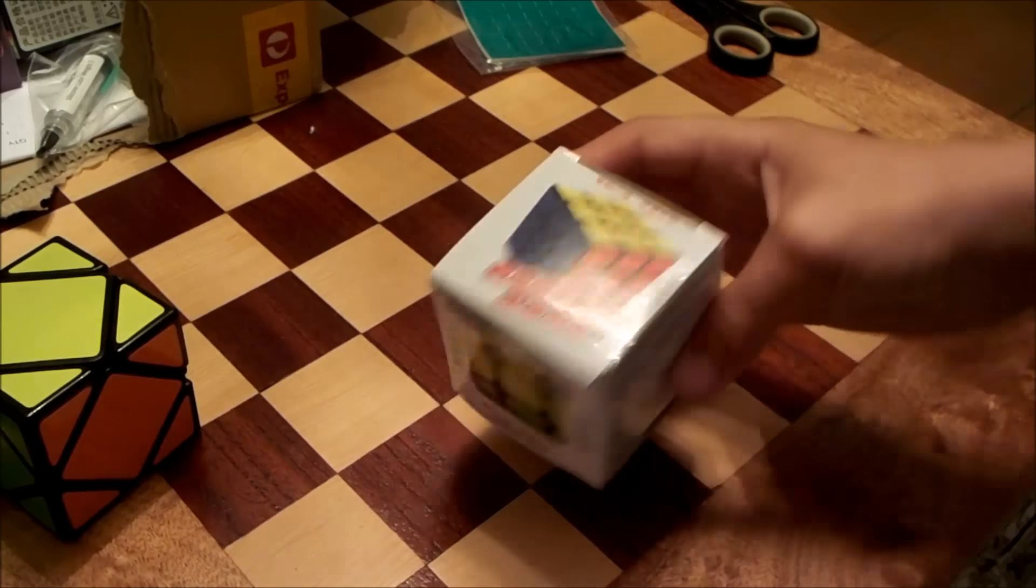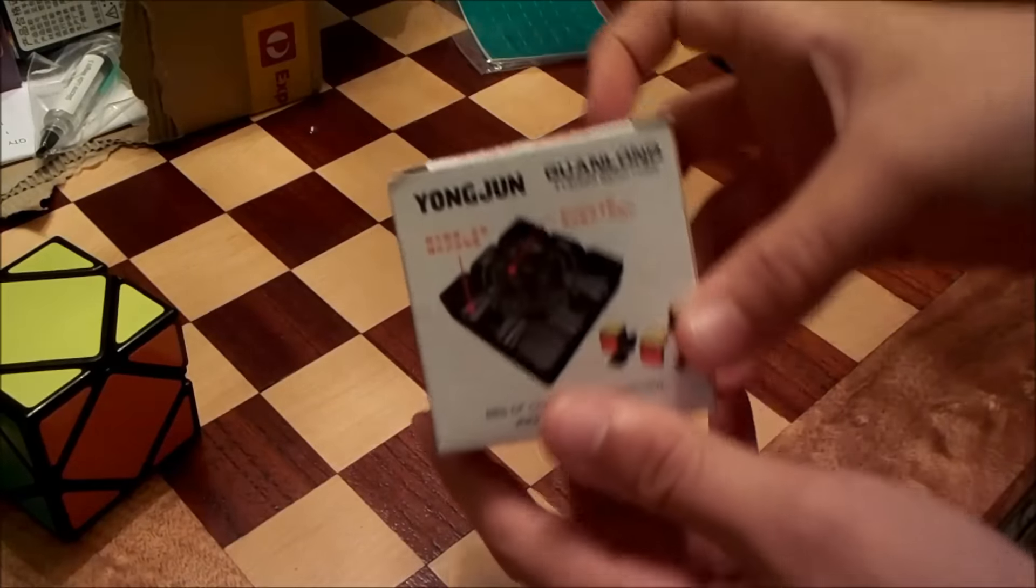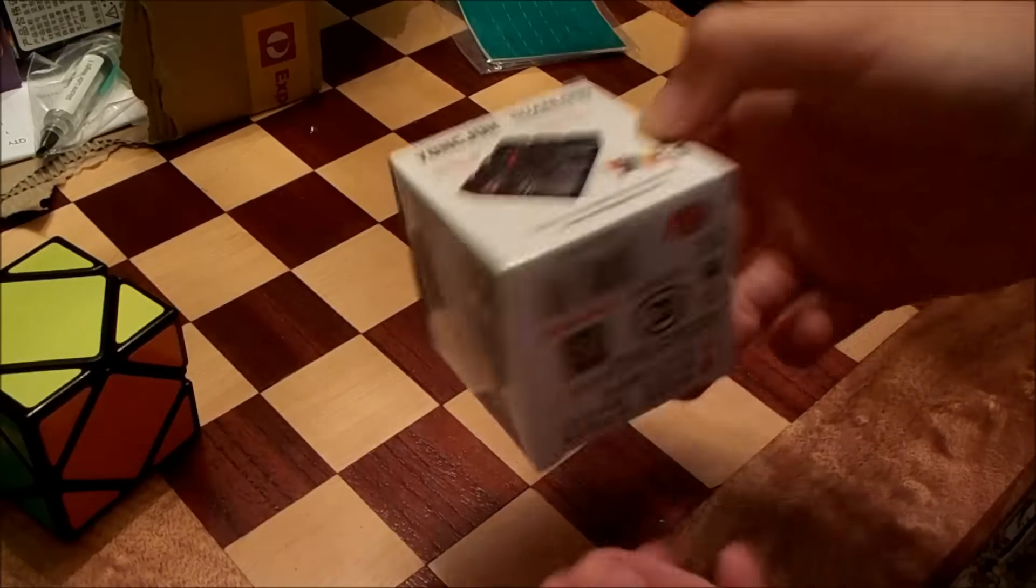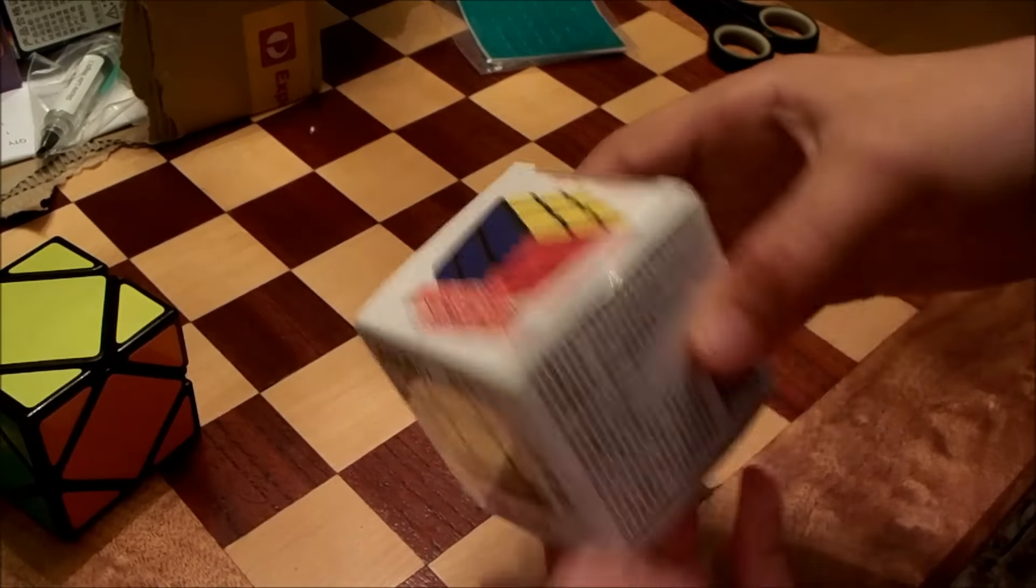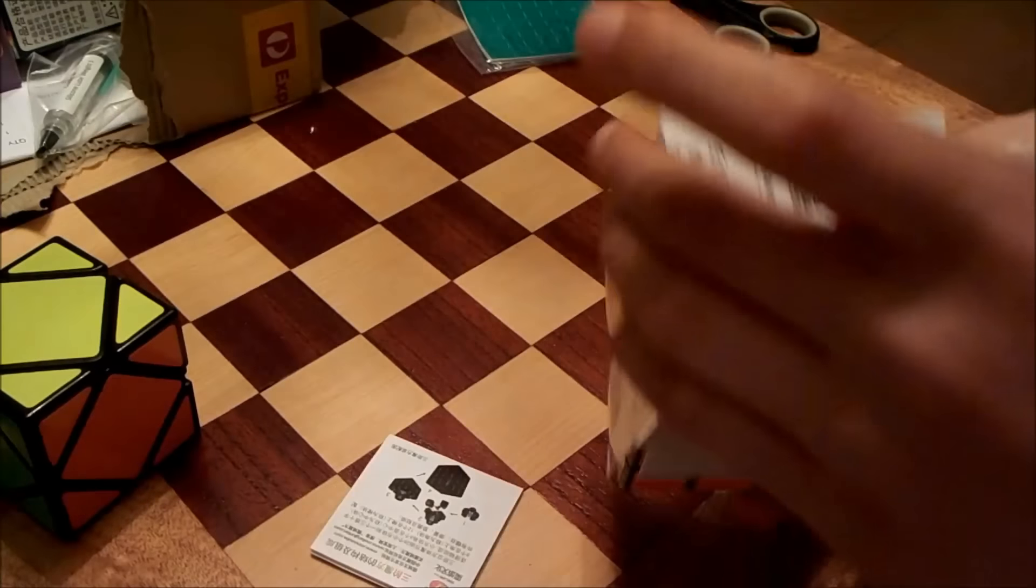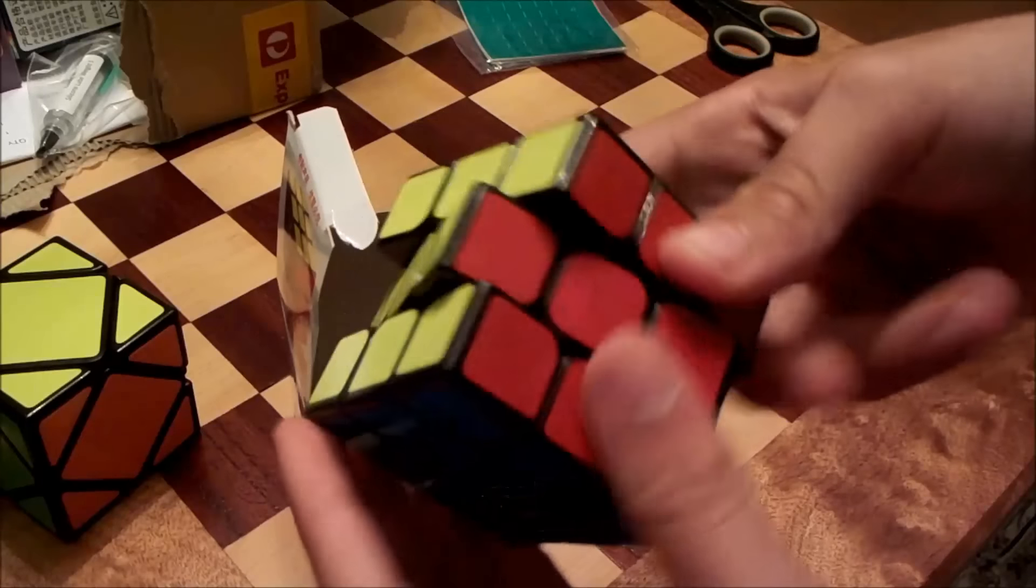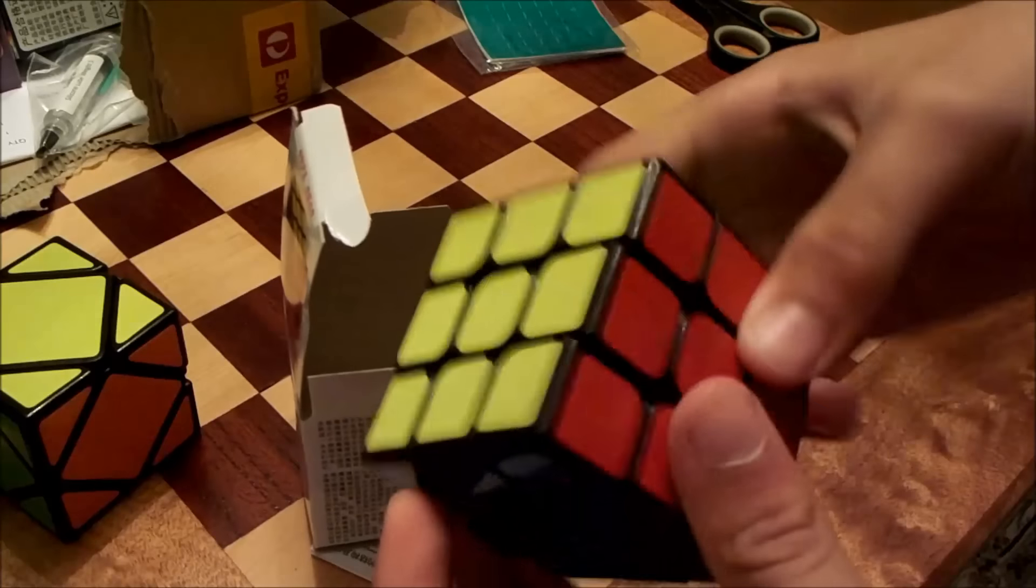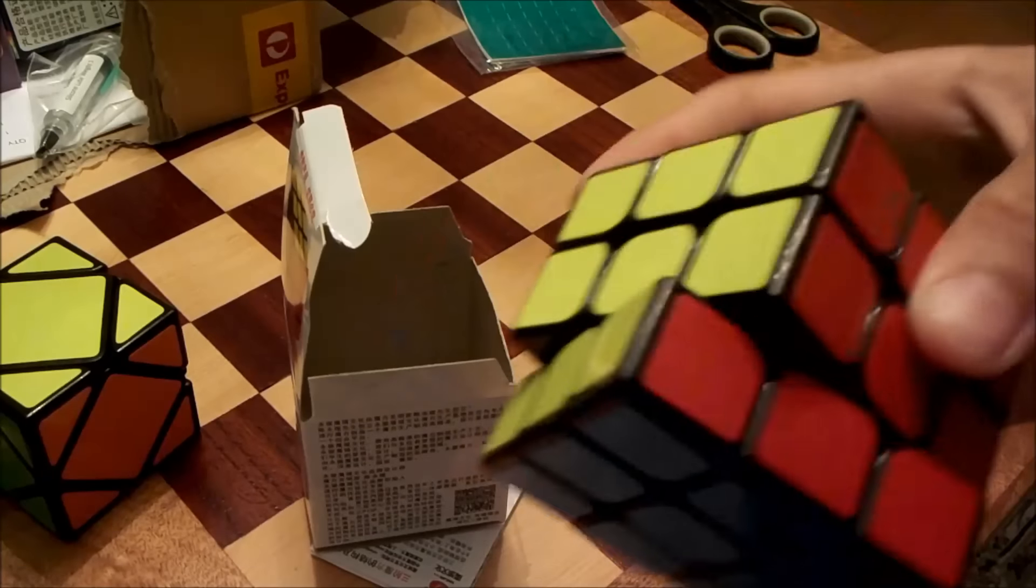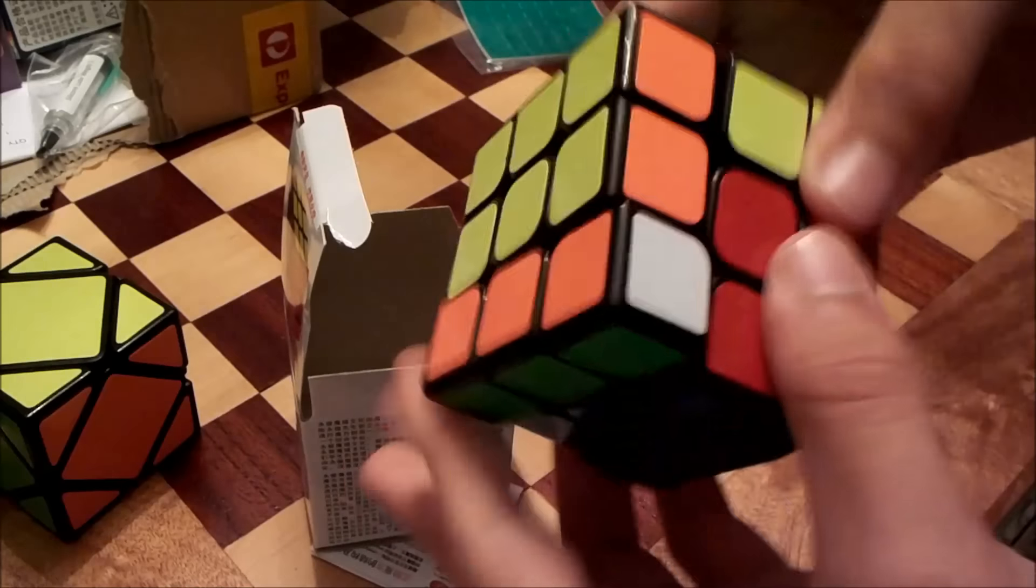Next, we have the YJ Guanglong. And this is what the box looks like. Now, this is one of the cubes that isn't for me. So this is for someone else that paid me so that they could get free shipping. So they said I could open it. Now, it's pretty smooth for a $6 cube. It's actually not too bad. It doesn't have great corner cutting, but it's pretty smooth for a $6 cube.